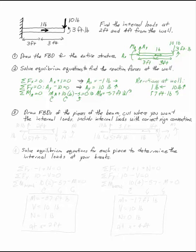So these are my reactions at the wall. Now, I want to draw free body diagrams of the piece of the beam where I've already cut it away. I can put my wall reactions on my diagram now. I've got 1 pound to the left, 10 pounds up, and 57 foot pounds counterclockwise at 2 feet.